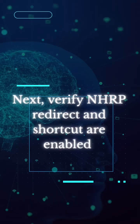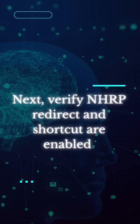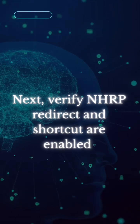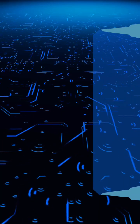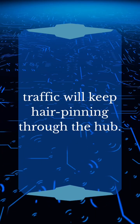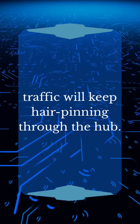Next, verify NHRP redirect and shortcut are enabled. Those are the brains of Phase 3. If they're missing, traffic will keep hairpinning through the hub.